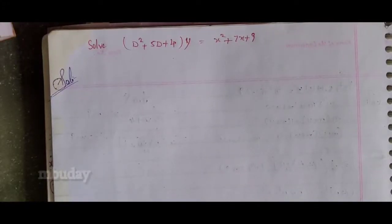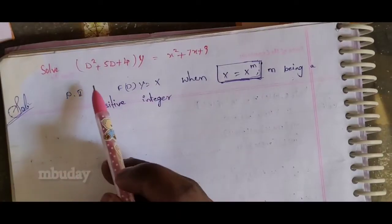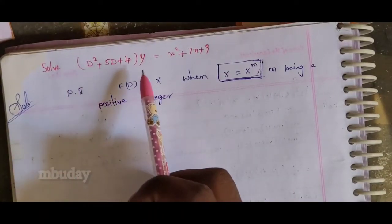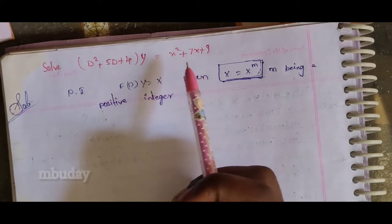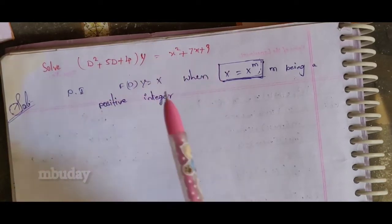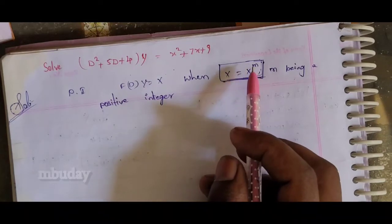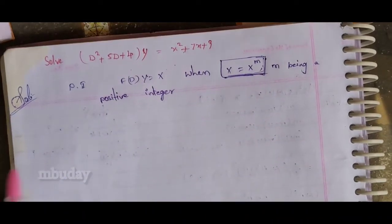Hi friends, welcome to my channel. Here we are going to solve this problem: D squared plus 5D plus 4 into y is equal to x squared plus 7x plus 9.